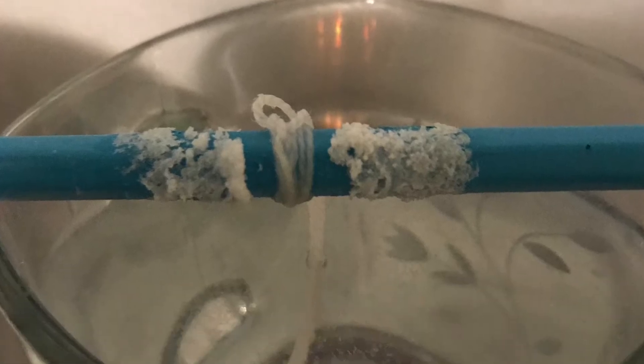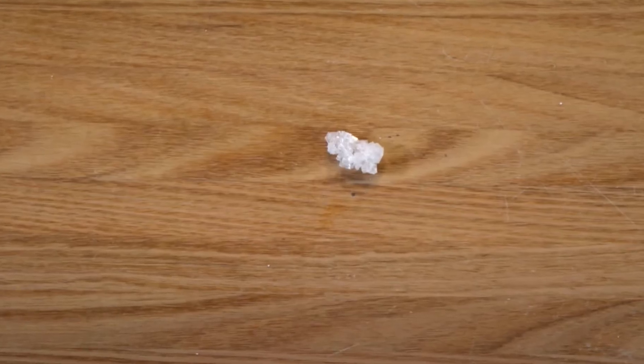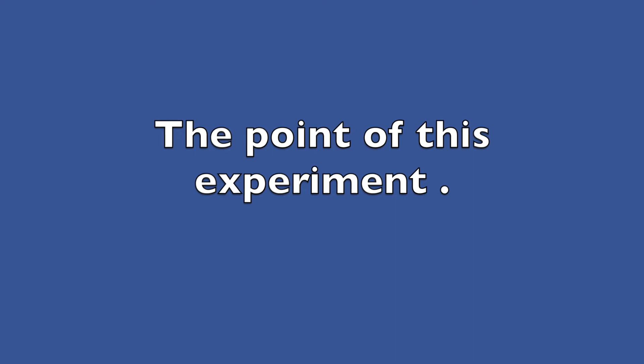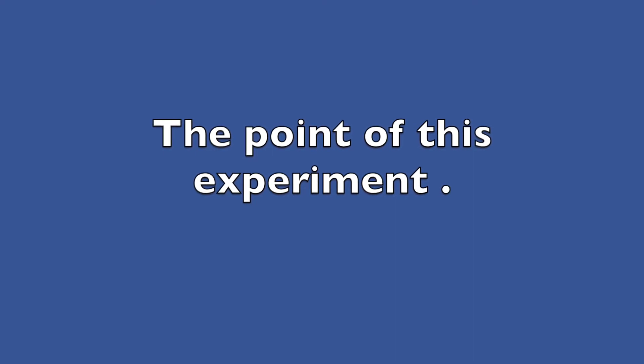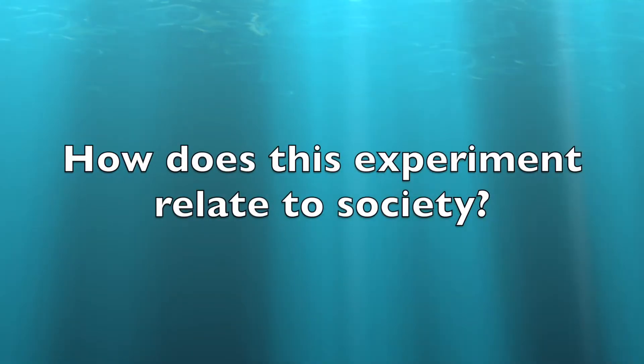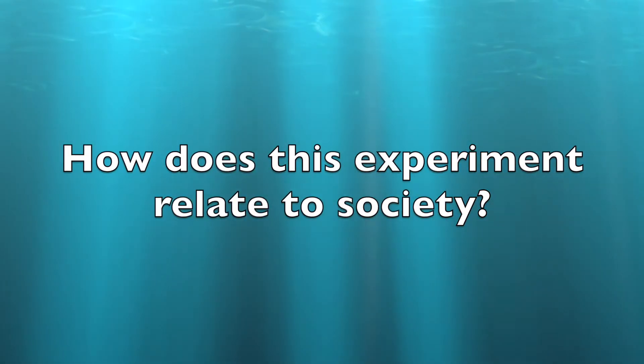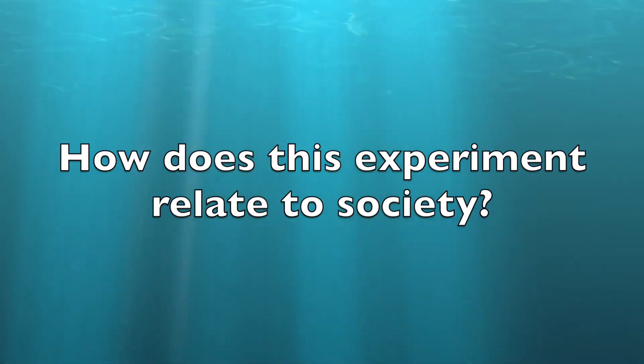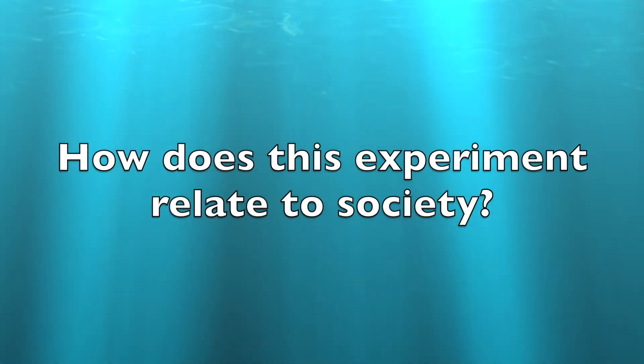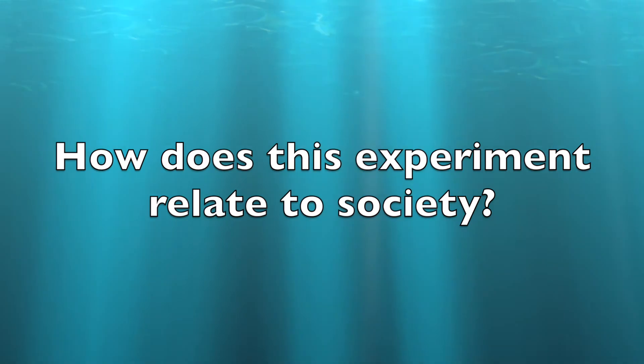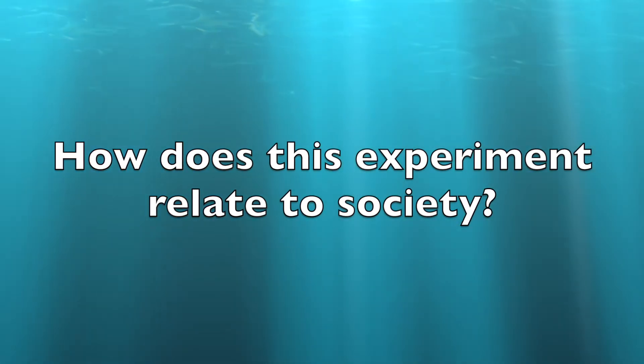And this is how my salt crystal turned out throughout this experiment. The point of this experiment is for kids to understand what salt and water can do with just simple supplies around the house. This experiment is related to society because kids see salt crystals everywhere, for example, formed near rocks at the park or at the beach, or in necklaces you see at the store.